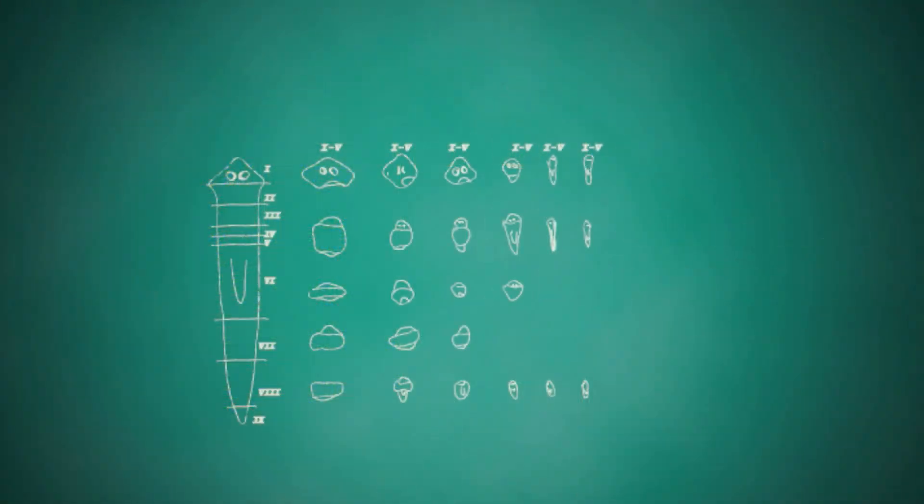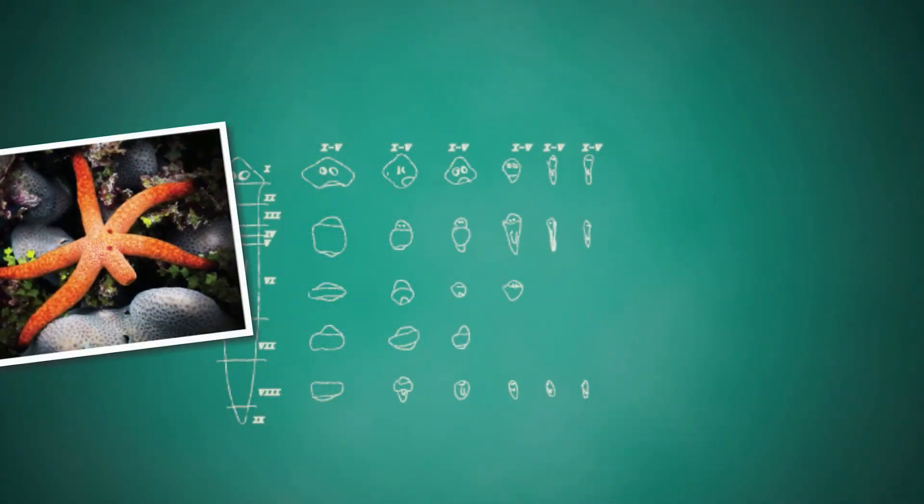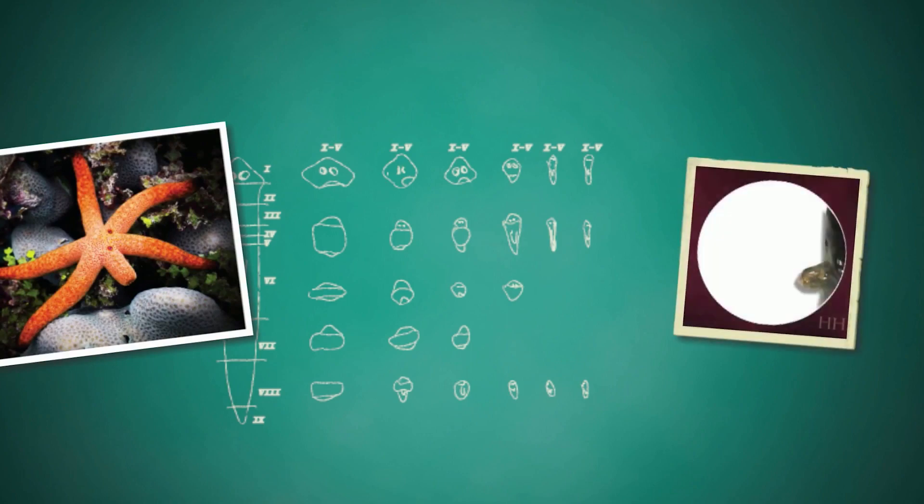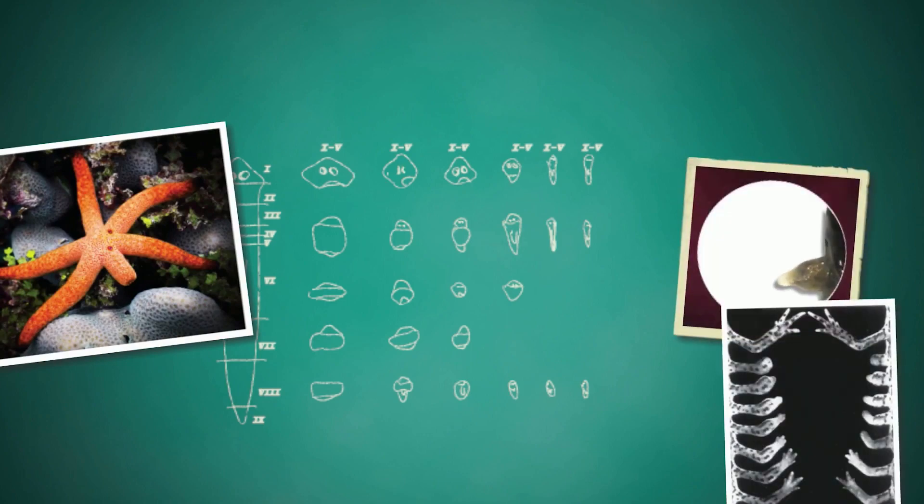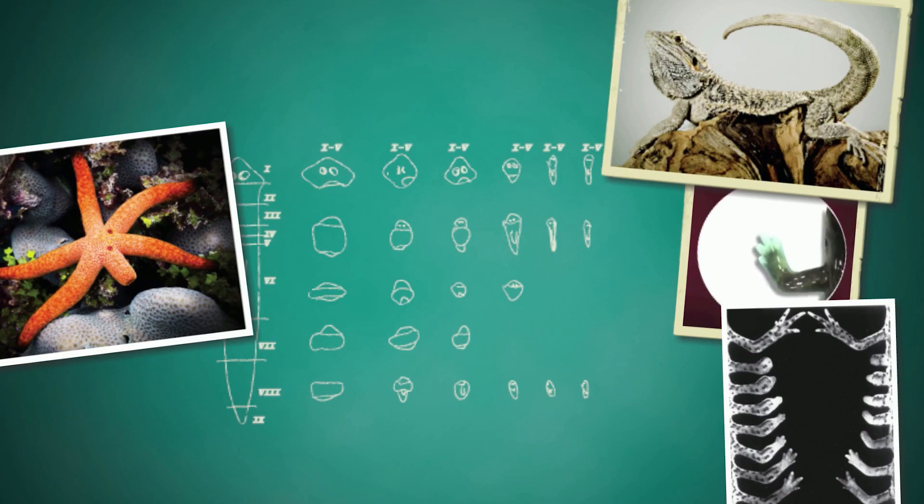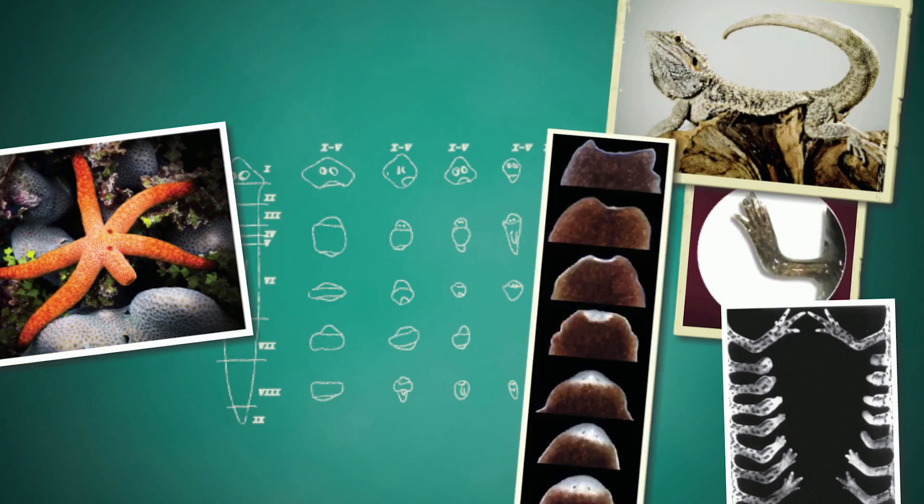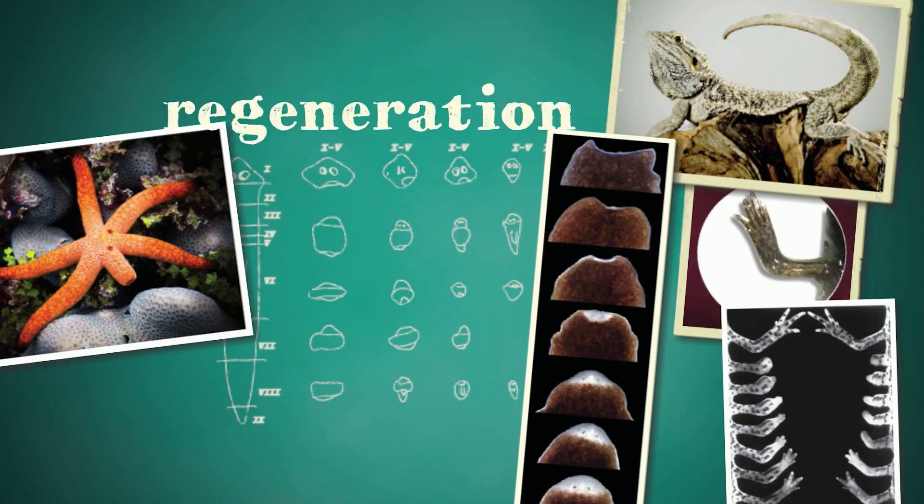Many animals can regrow lost body parts. Starfish can grow new arms. Newts and salamanders can grow new legs. Lizards can grow new tails. And planaria, a type of flatworm, can even grow new heads. This process, known as regeneration, relies on stem cells.